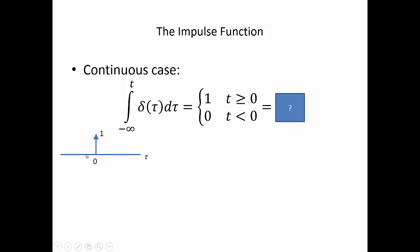Now, you've seen that function before. What is that? That's our unit step function. So the integral from minus infinity to t, delta of tau d tau, is our unit step function.